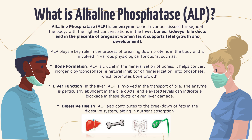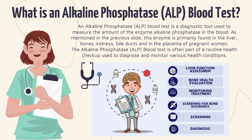Now that we know what alkaline phosphatase is, let's take a closer look at what the alkaline phosphatase blood test is all about. An alkaline phosphatase blood test is a diagnostic tool used to measure the amount of the enzyme alkaline phosphatase in the blood. This enzyme is primarily found in the liver, bones, kidneys, bile ducts, and in the placenta of pregnant women. The test is often part of a routine health checkup and is used to diagnose and monitor various health conditions.